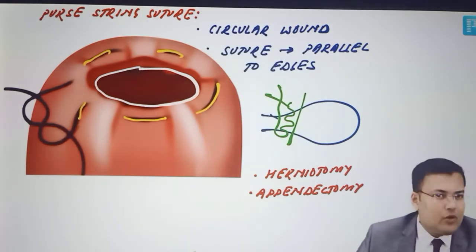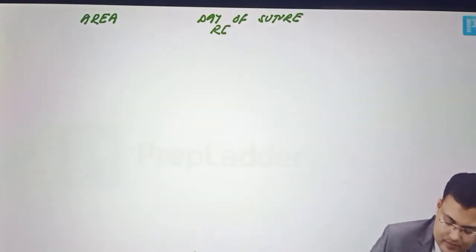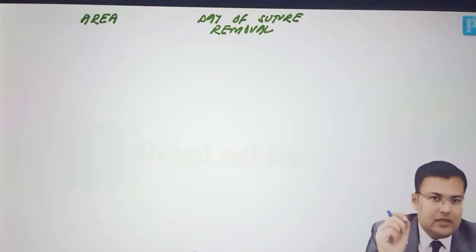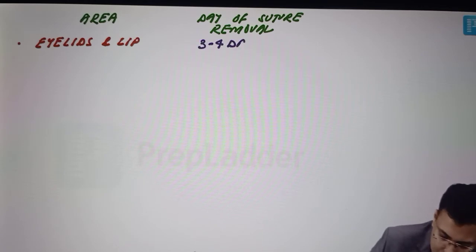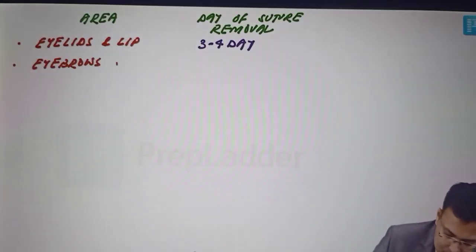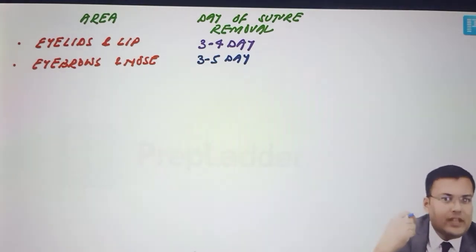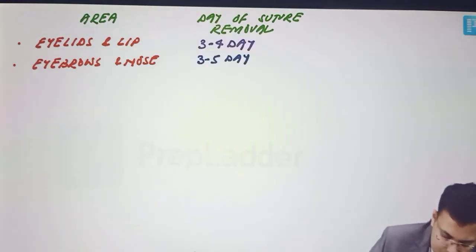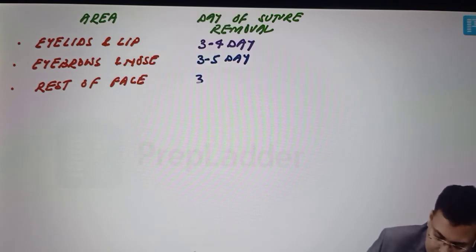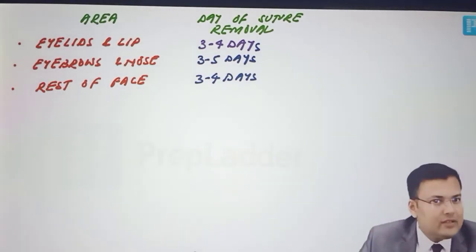These are the important types of suturing techniques. Now, the guidelines for the day of suture removal: it varies from one site to another. In eyelids and lip, sutures are removed on the third to fourth day. In eyebrows and nose, they are removed on the third to fifth day. For the rest of the face excluding ear, sutures are removed on the third to fourth day. So roughly, in face-related areas, sutures are removed around day three to four, excluding the ear. In ears, sutures are removed on the tenth to twelfth day.